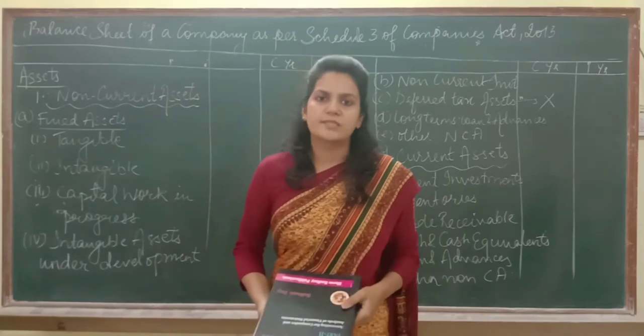Next is inventories. Inventories include goods, work in progress, raw materials, and finished goods lying unsold as on 31st March. It also includes spare parts, loose tools, and goods in transit. Next is trade receivables, which includes debtors and bills receivable.